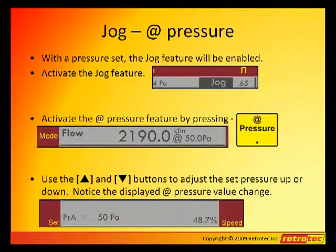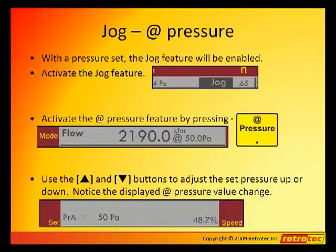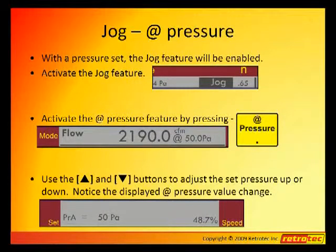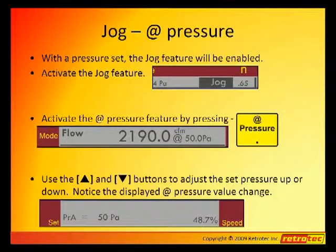Another wonderful feature on the DM2 is to use the Jog feature in conjunction with the At Pressure key. If we press the At key three times, we will cycle around all of the At Pressure settings. One of those At Pressure settings will actually follow the Set Pressure, so if we set pressure to 50, then it will give us the extrapolated pressure to 50 Pa.